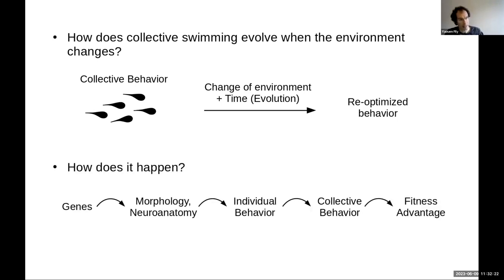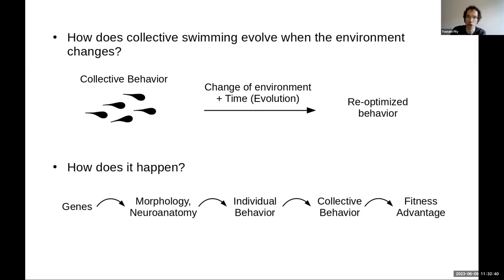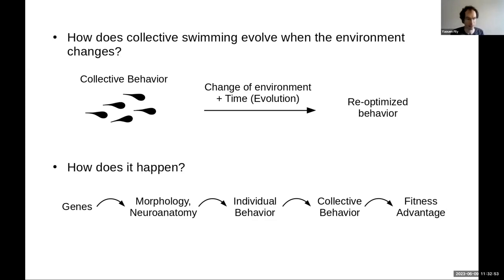The way that happens is pretty complex and involves many steps that are still very poorly understood. You start from genes — genetic mutations or maybe genetic plasticity — which then changes the morphology, the neural circuitry, the neurochemistry of the fish's brain. That then changes their individual behavior: the way they process information, the way they respond to the presence of their neighbors. That in turn creates some kind of emergent collective behavior, which hopefully gives them some kind of fitness advantage.